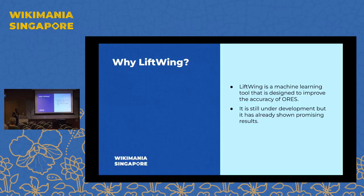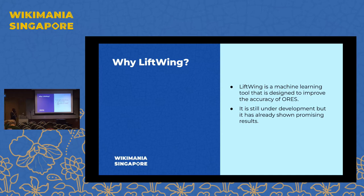Lift Wing is basically a machine learning tool that has been designed to improve upon how ORES works. Although it's still under development, there are certain features that need to be developed to improve content quality related to most Wikimedia projects, and to host multiple deployments in different languages and help different languages identify the classifications they want to work on.